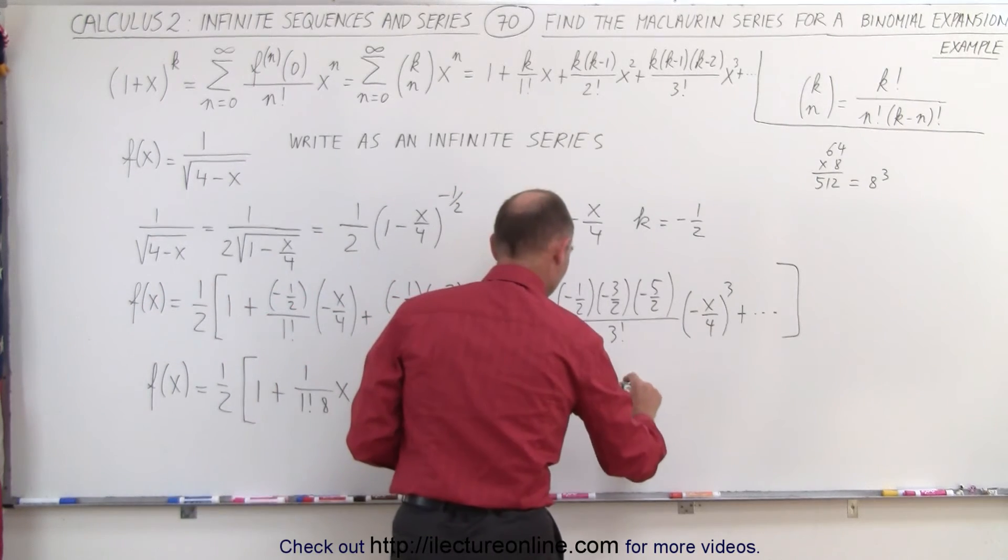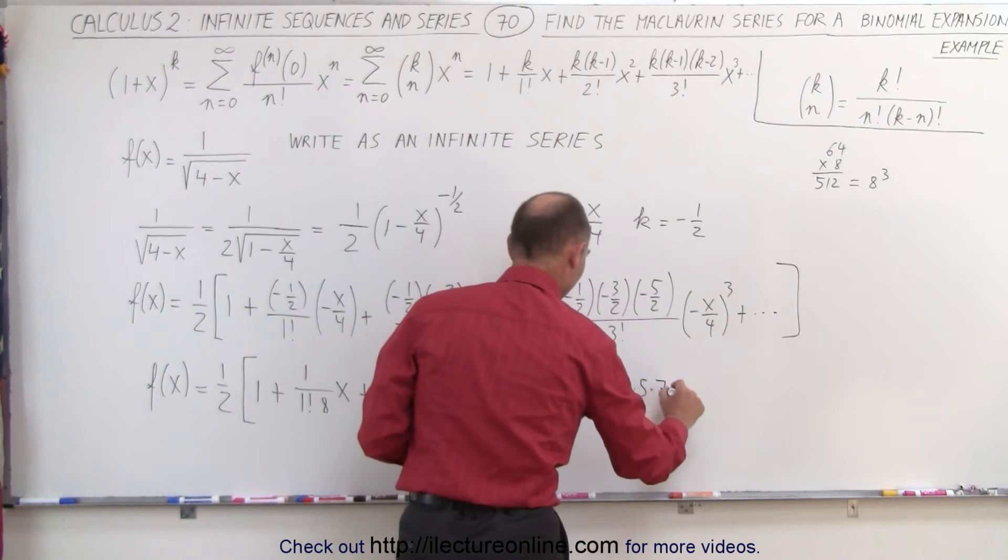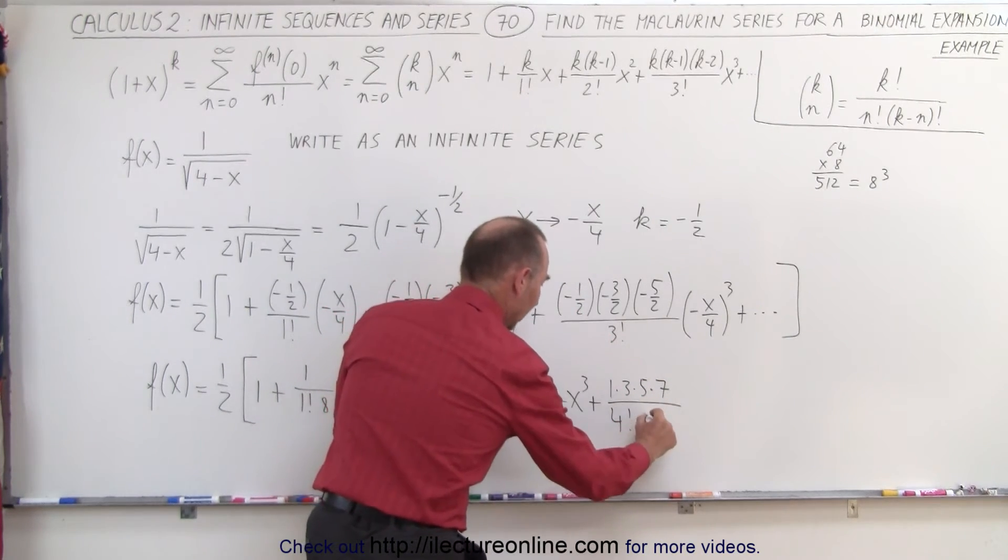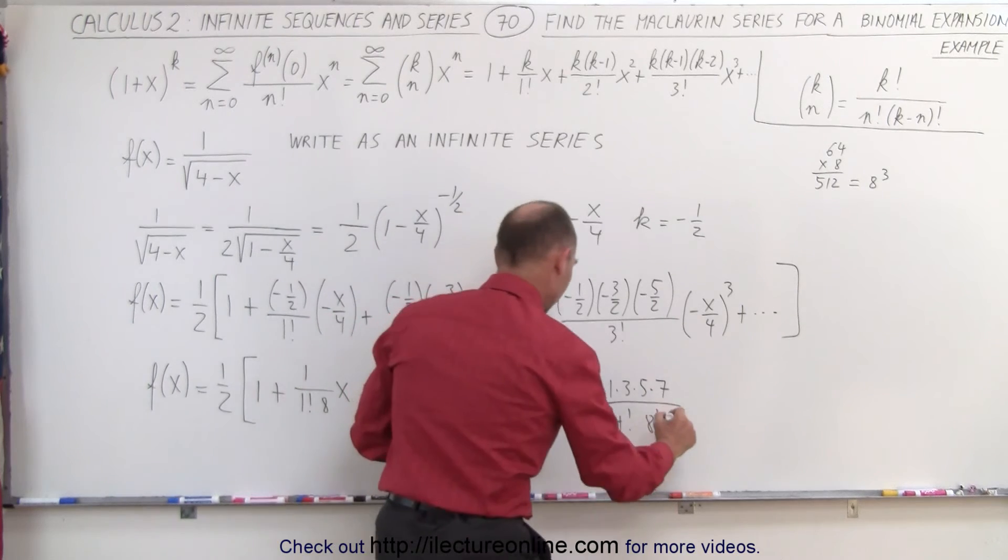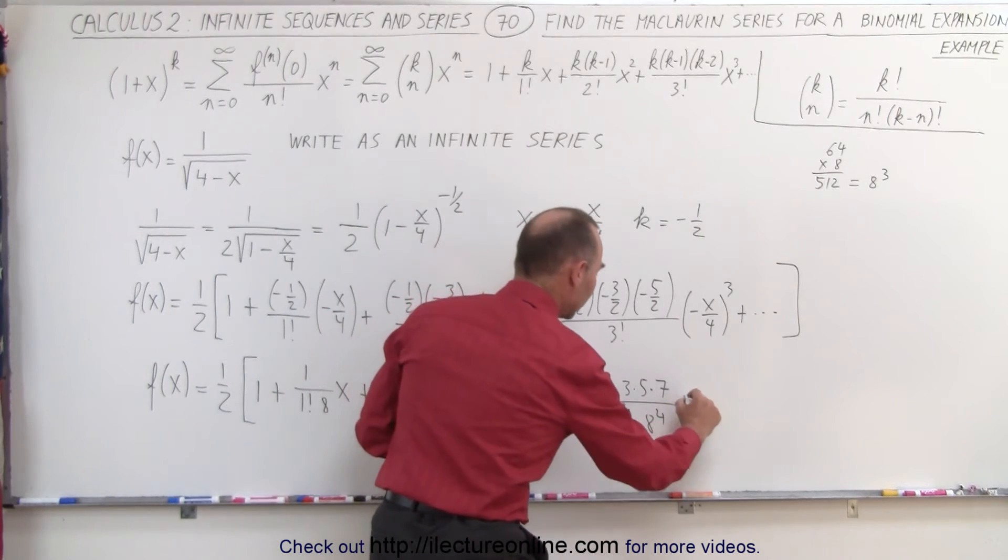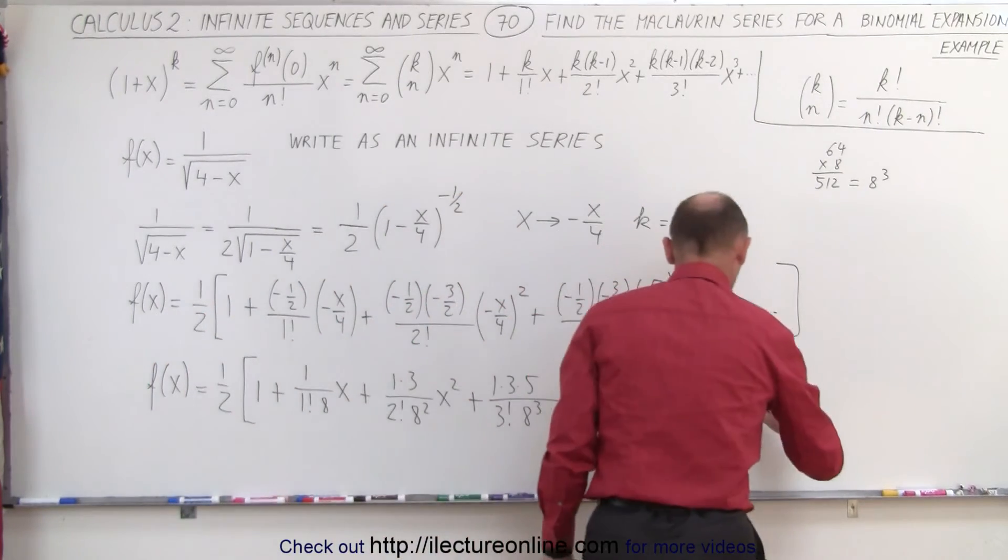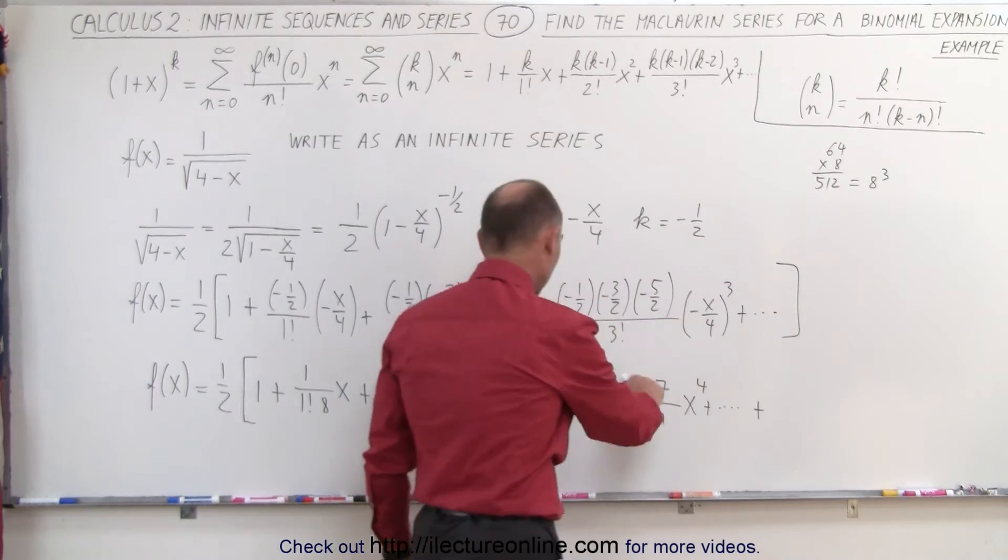The next term will become 1 times 3 times 5 times 7 over 4 factorial times x to the fourth power times 8 to the fourth power times x to the fourth power. And you can see that in general you can then write the terms as follows.